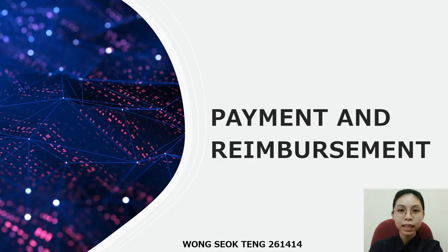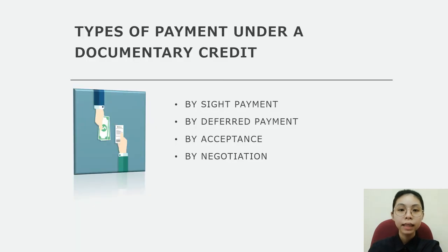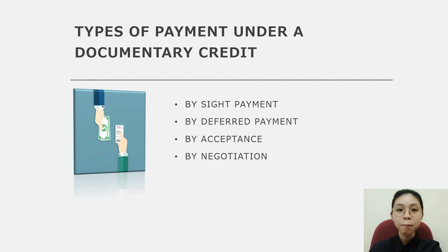My name is Wong Jo Ting, metric number 261414. I am going to talk about payments and reimbursement under a documentary credit. There are basically four types of payments: payment by sight payment, payment by deferred payment, payment by acceptance, and payment by negotiation.